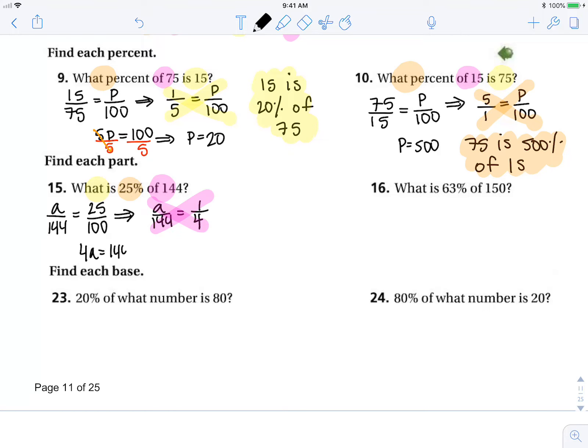4a equals 144. And if I divide each side by 4, a equals 38. So 38 is 25% of 144.